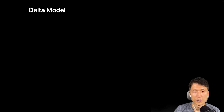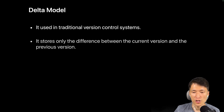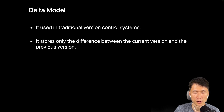There is a method called the delta model for storing data. The delta model is a traditional method used in version control systems. When a change occurs in a file, only the modified parts are saved, creating a new version by comparing it with the previous version.